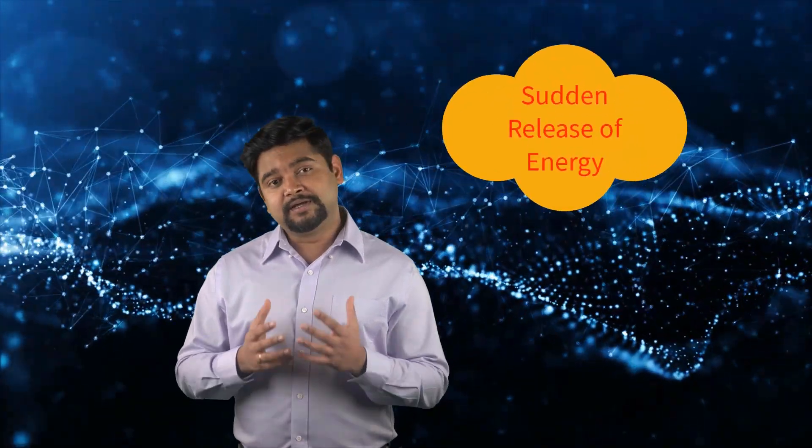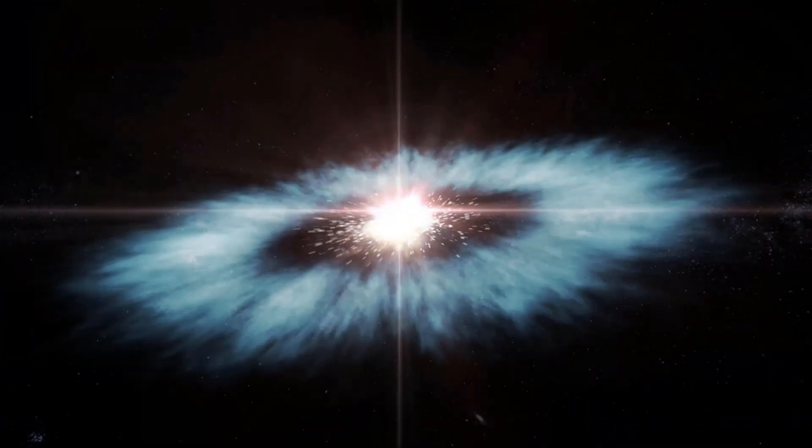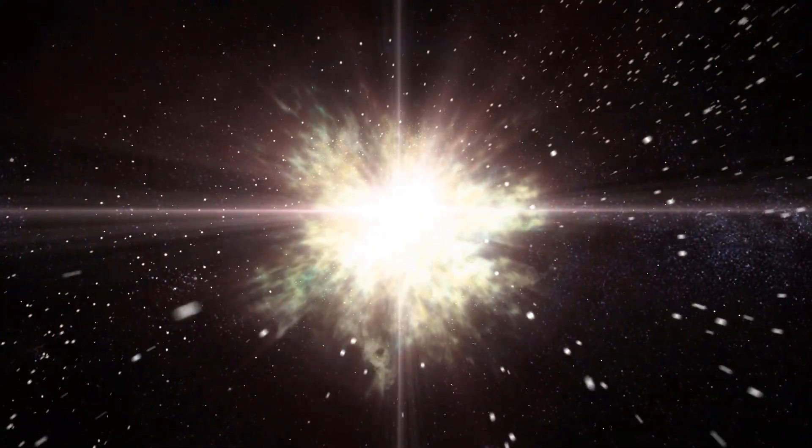Besides supersonic flow, a sudden release of energy is another mechanism of generating a shock wave. In this scenario, the energy is dissipated into the ambient environment through an expanding shock. A subsonic flow is present at the downstream side of the shock. One typical example of this type of shock is blast waves that are created by massive explosions.